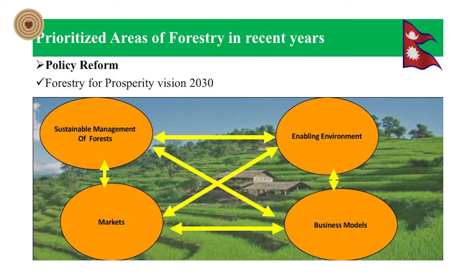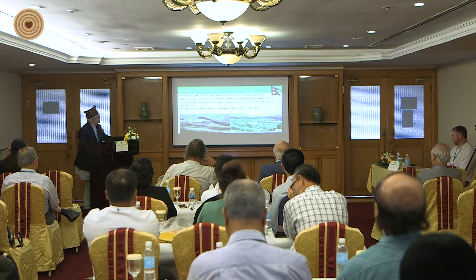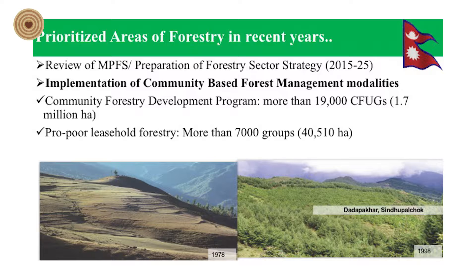We established a forestry sector master plan, which was revised in 2017. We have developed a forest policy and forestry strategy focused on establishing community forests. We have both protected forests and potential production forests. We are promoting forest for prosperity through four pillars: sustainable management of forests, enabling environment, market and business models for community property and government property. Priority areas include improvement of community-based management modalities and community forest development programs. We have more than 20,000 community-based organizations to promote productive and prosperous outcomes for local people.